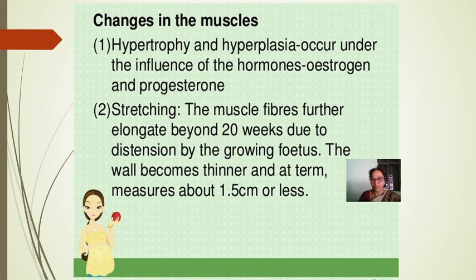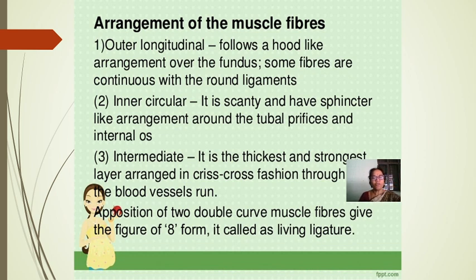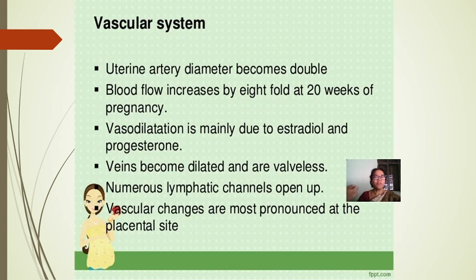At term the wall measures about 1.5 cm or less. The arrangement of muscle fibers: outer longitudinal fibers follow a hood-like arrangement over the fundus, continuous with the round ligaments. Inner circular fibers are scanty with sphincter-like arrangement around tubal orifices. The intermediate layer is thickest and strongest, arranged in criss-cross fashion through which blood vessels run — the opposition of two double-curved muscle fibers gives a figure-of-8 form, called a living ligature.